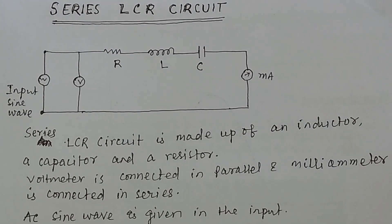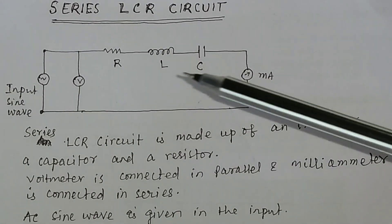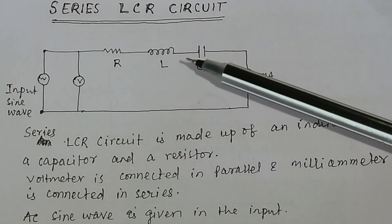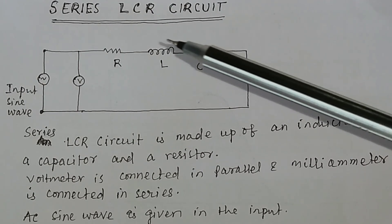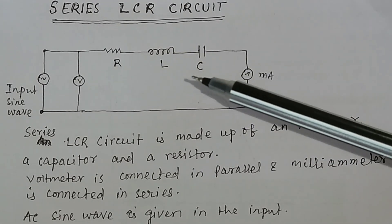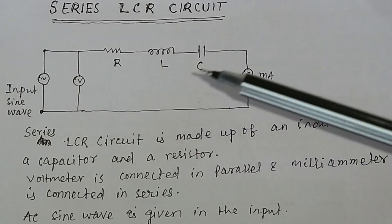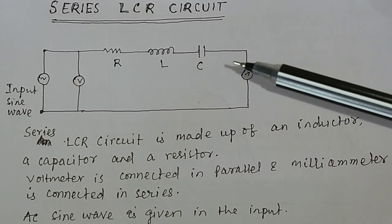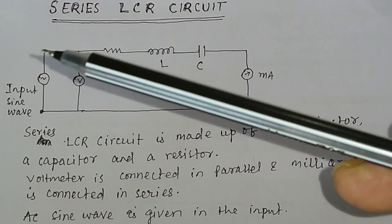What is a series LCR circuit? In a series LCR circuit, a resistor, an inductor, and a capacitor are connected in series. The voltmeter is connected in parallel and the milliammeter is connected in series. The input sine wave is given here.